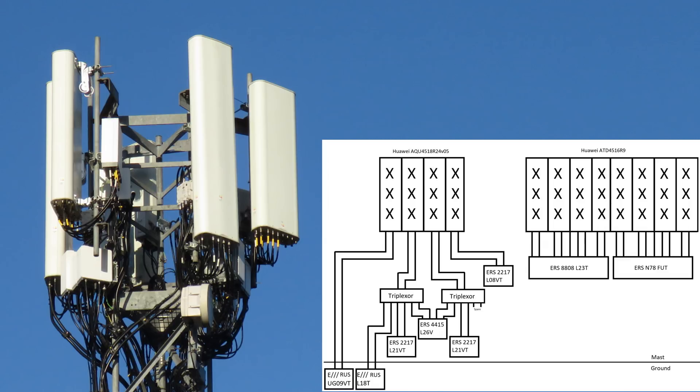The 2600 megahertz is occupied by two of the transmit and receive from the ERS 4415 for Vodafone's L26. The second triplexer then carries the remaining two transmit and two receive from that ERS 4415 to provide the 4T4R for Vodafone's L26 and the second triplexer's 2100 megahertz ports have much of the same function so they carry the remaining 2T2R for the 2100 megahertz system from the second ERS 2217 for 2100 megahertz.